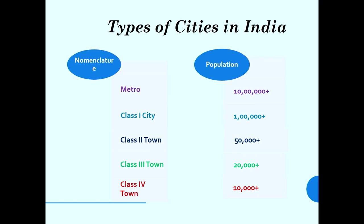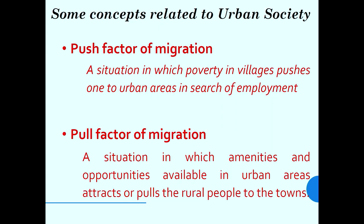There are different types of cities. Metro cities have around 10 lakh plus population. Then Class 1 cities have 1 lakh plus population, Class 2 towns have 50,000 plus population, and there are different further classifications.